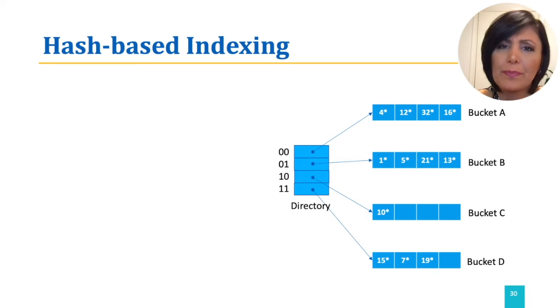However, consider inserting entry 20. Applying the hash function, this should be added to bucket A. Bucket A is full. Therefore, we need to split the bucket and redistribute the contents of bucket A.